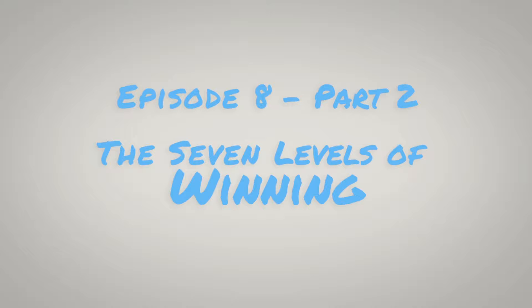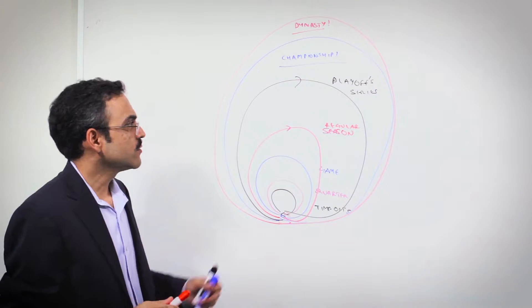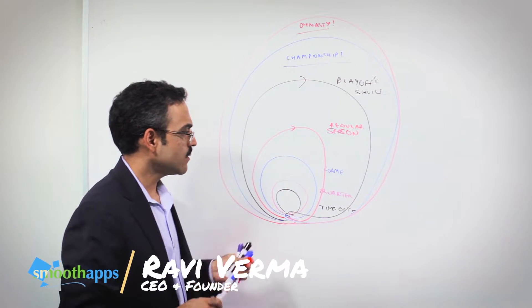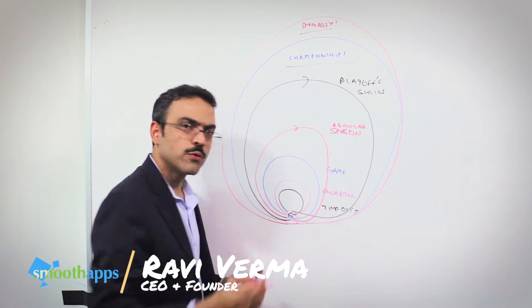When we ended the last episode, we were discussing how the seven levels of winning relate to agile software delivery. If you haven't watched that episode, make sure to go take a look and come right back. Now let's continue the conversation.